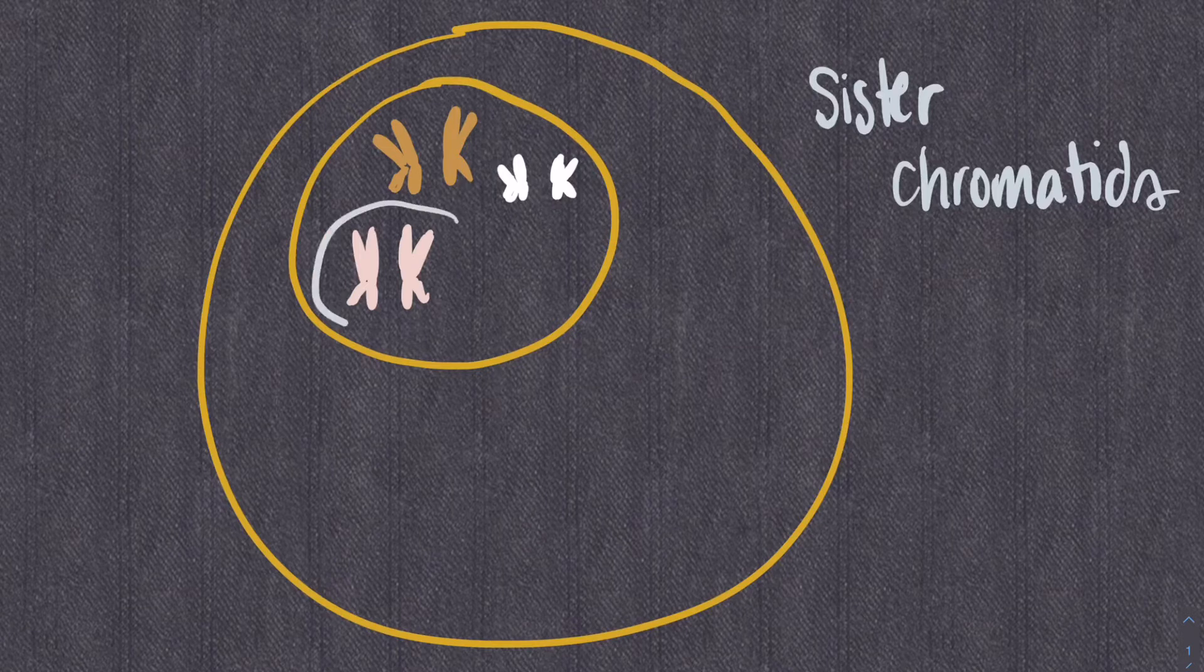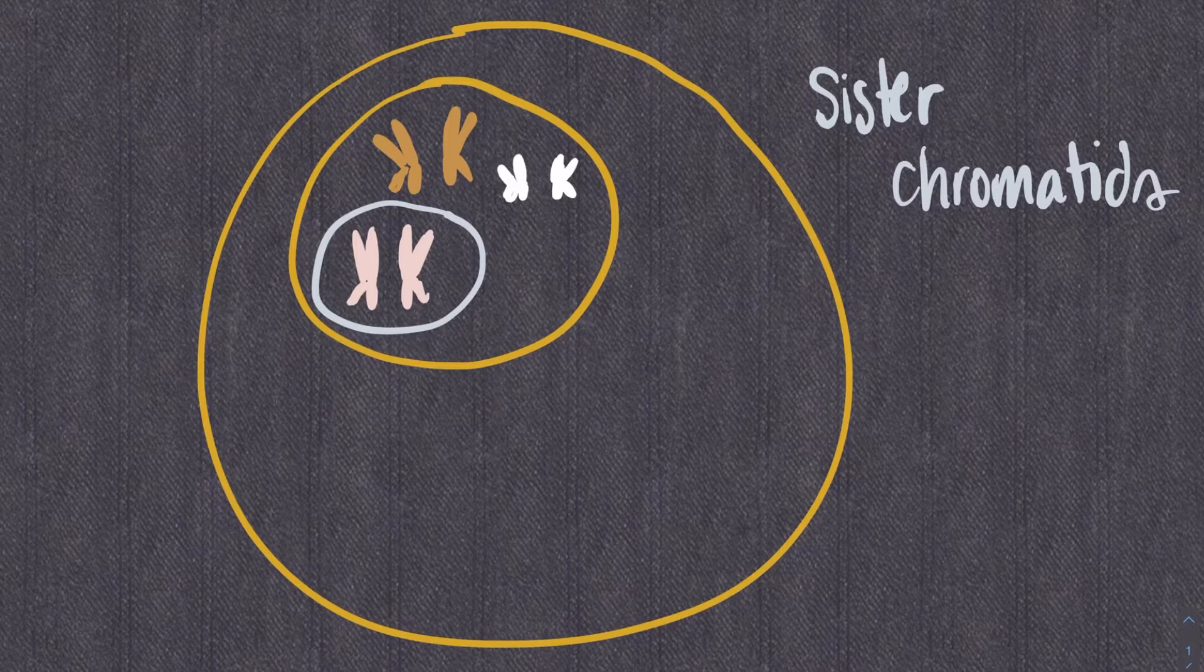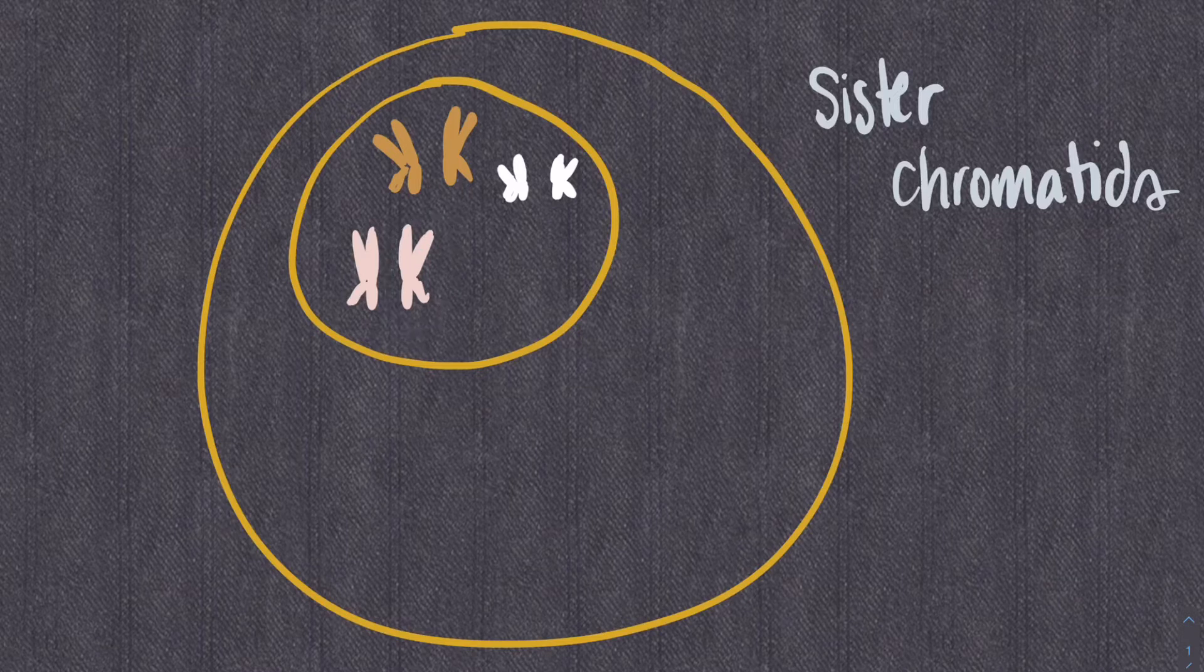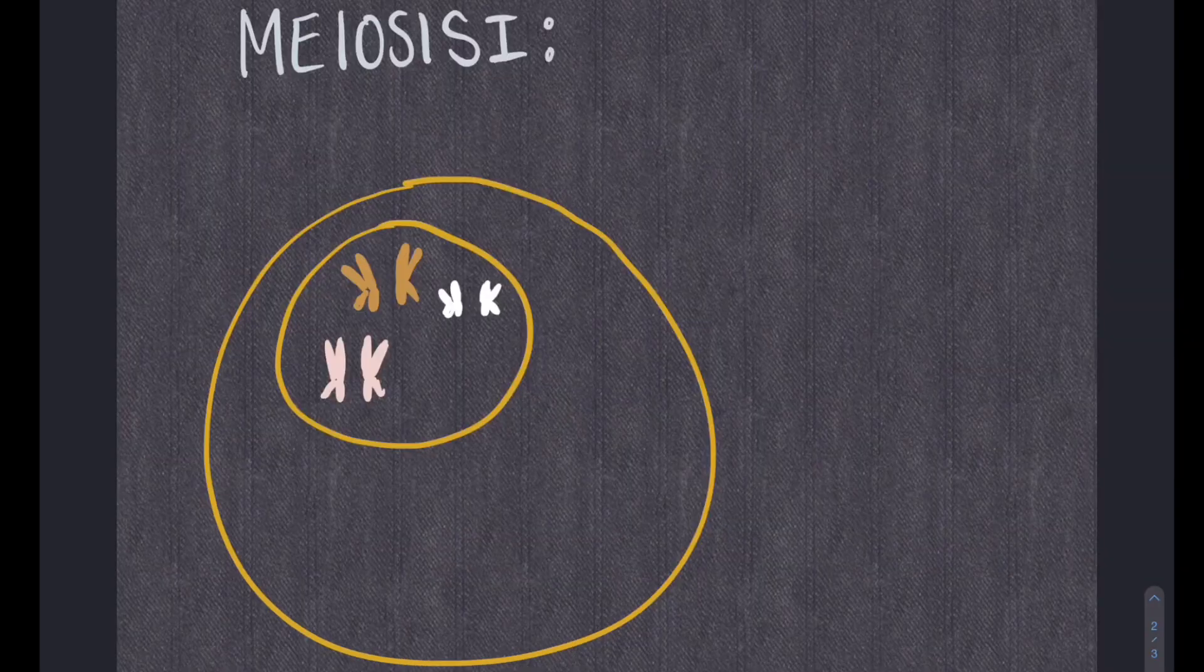These are homologous chromosomes. They code for the same things, but are not necessarily identical in genetic information. This is one chromatid. It results from chromosome duplication. These are sister chromatids. They are currently identical in genetic information. Okay, now we're ready for meiosis to begin.